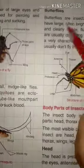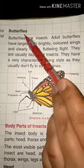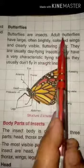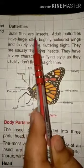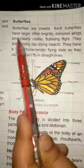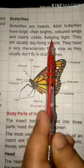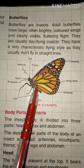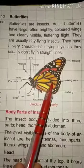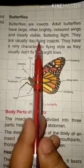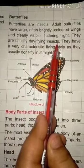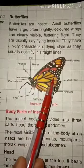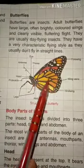Now we will know about the butterfly. The butterfly is the most beautiful insect in the world. Adult butterflies have large, often brightly colored wings and a clearly visible fluttering flight. These butterflies have very bright, colorful wings. They are usually day-flying insects that fly in the daytime.